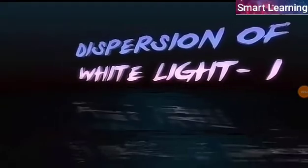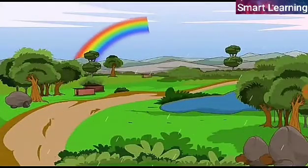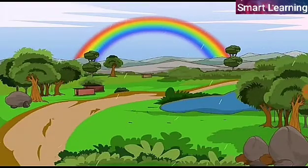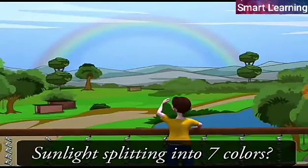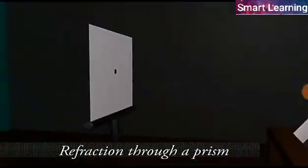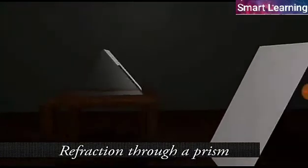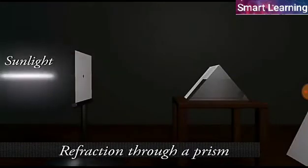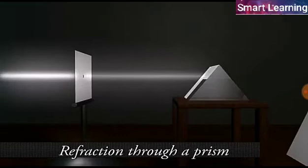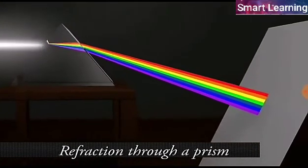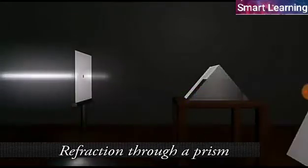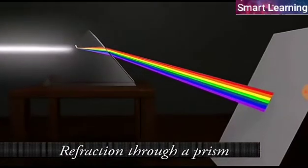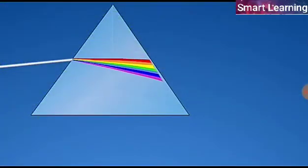Dispersion of white light, part 1. You must have seen and appreciated the spectacular colors of a rainbow. Have you ever thought how the white light of the sun gives us the various colors of the rainbow? To understand this, we shall first understand the diffraction through a prism. When a narrow beam of sunlight passing through a tiny hole is made to fall on a triangular glass prism, we see a band of seven colors on the screen on the other side. This phenomenon of splitting of white light into its constituent seven colors on passing through a glass prism is called dispersion of light. And the band of colors is known as a spectrum.